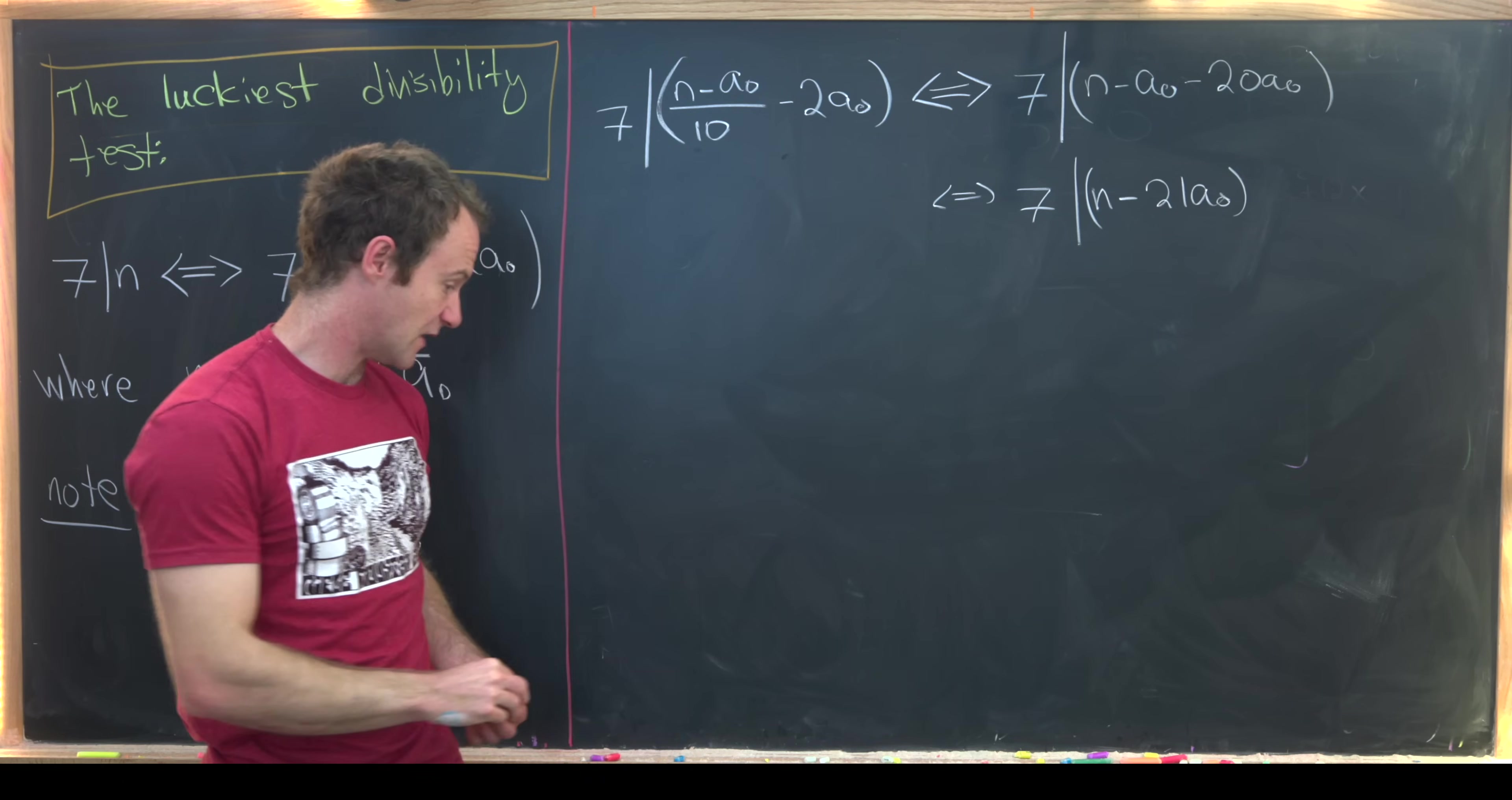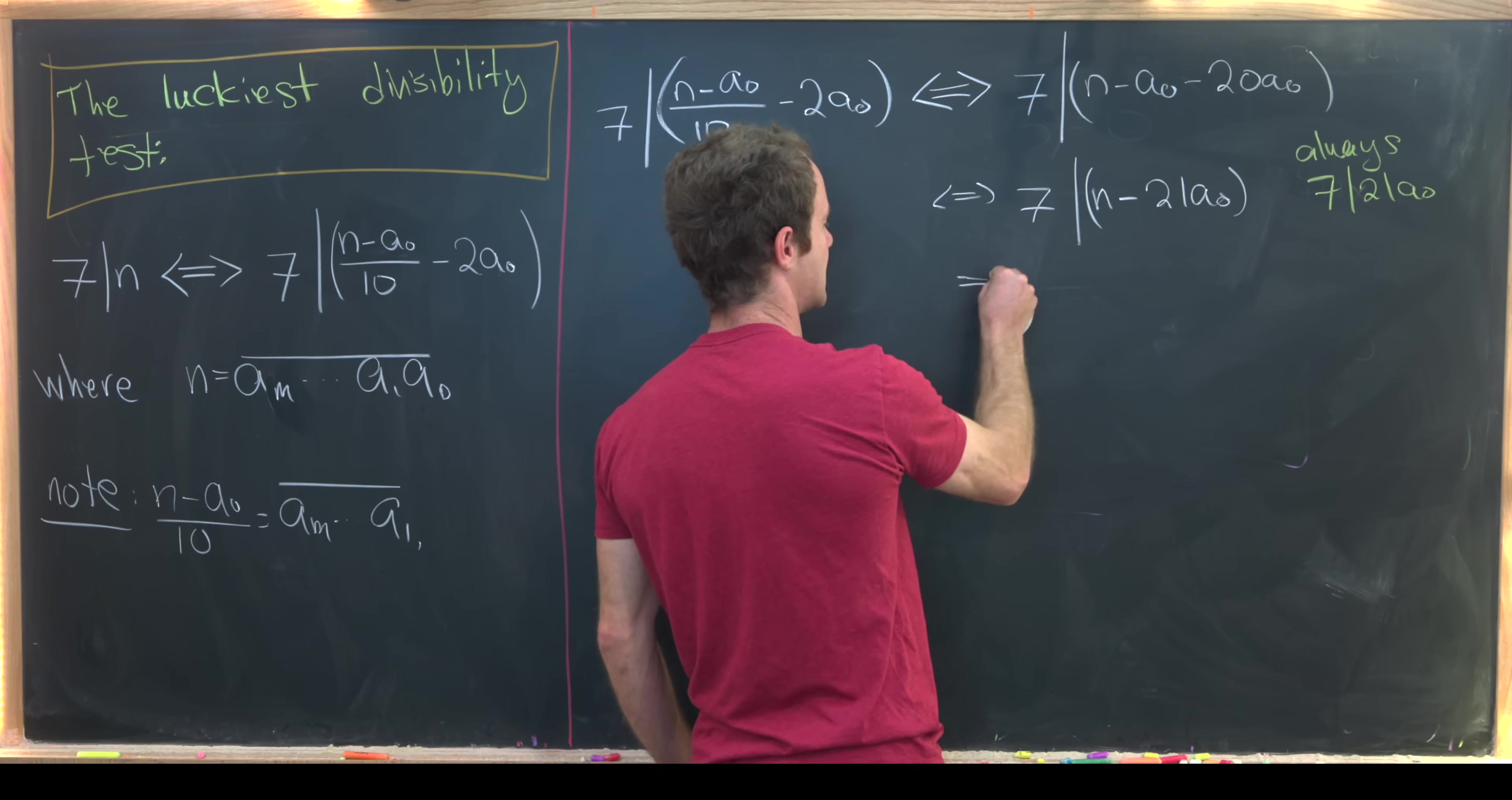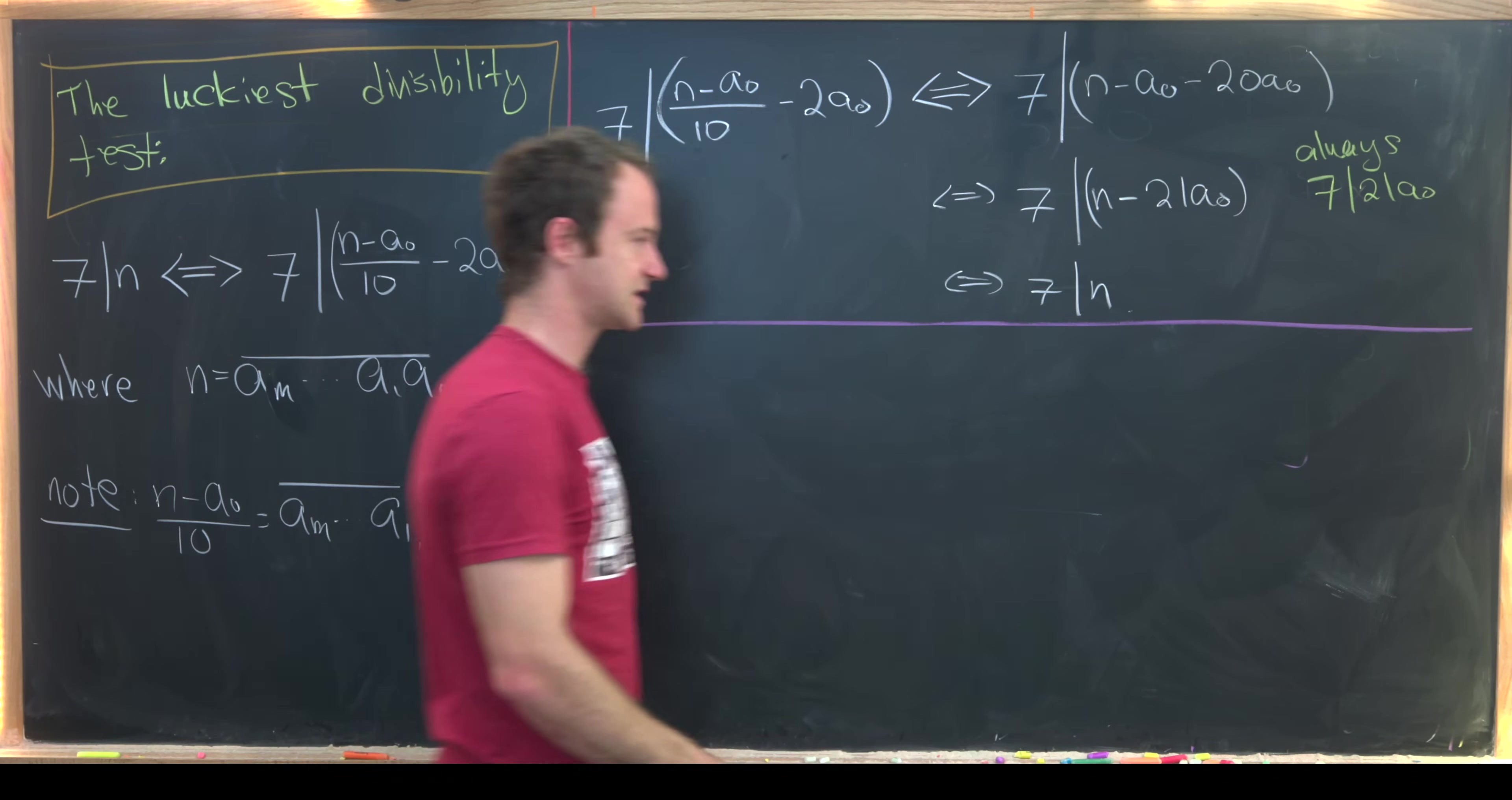But then always, so let's write that over here, always we know that seven divides 21a naught because 21 is a multiple of seven. So if seven divides 21a naught, then that means that seven must divide n because it divides that combination of n and 21a naught. All of our steps were if and only if statements, so we're actually good to go there. We have our divisibility test for seven.